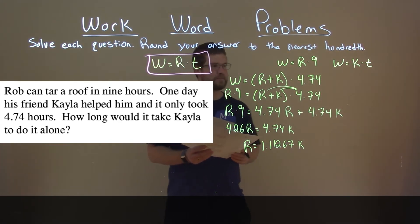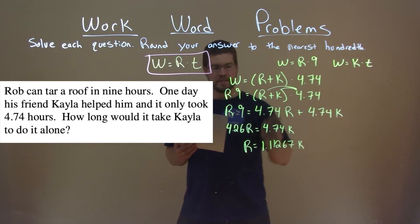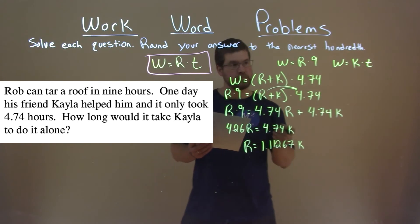Where can we go from here? We know work is equal to r times 9.